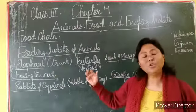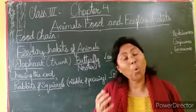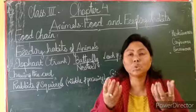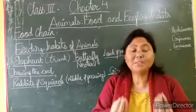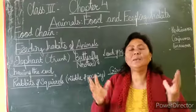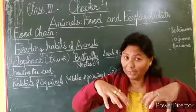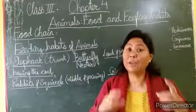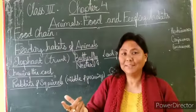Now, if you talk about the butterfly - what is the food of the butterfly? Nectar. And what is nectar? Nectar is the sweet juice which flowers produce. You must have seen beautiful butterflies sitting on flowers - why? To suck the nectar. And from that nectar, we get honey.